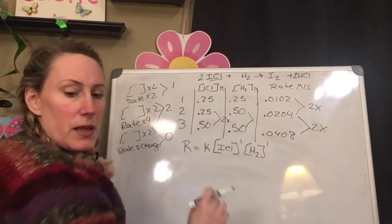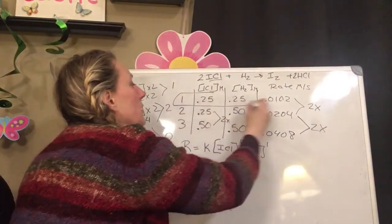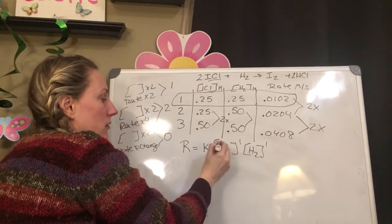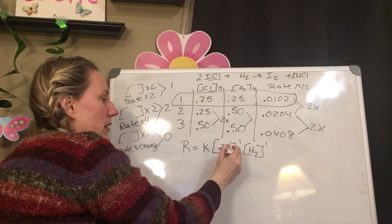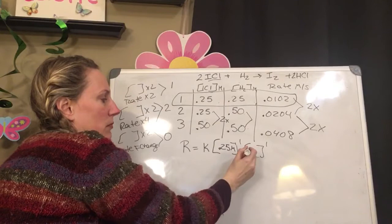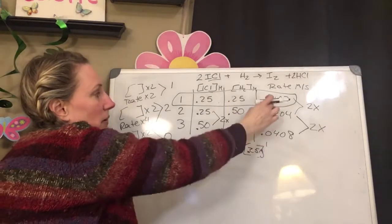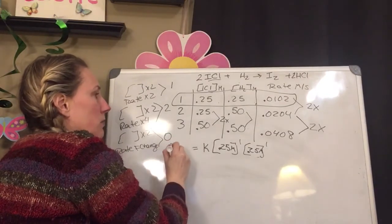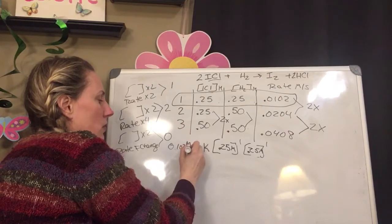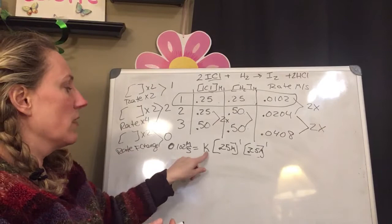So let's just see which ones they pick. They picked 0.102, so they picked the first trial. So in the first trial, my concentration of ICl is 0.25, my unit is molar. And H2, my concentration is 0.25, my unit is molar. And my rate is 0.102, and it's M over second. That's a 0. So now I have to just solve for my k.